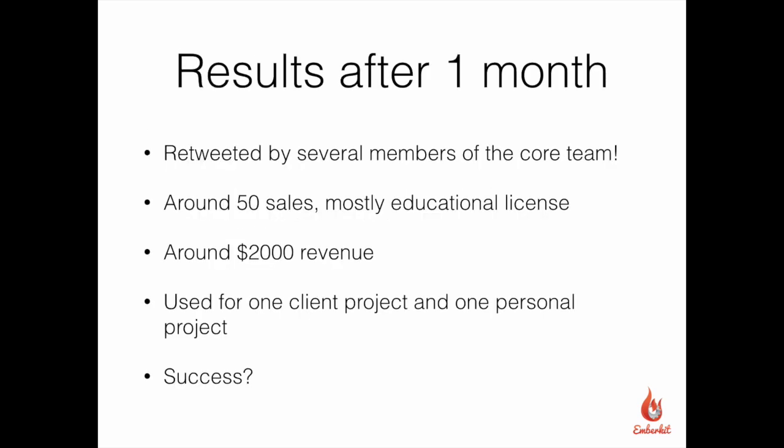After one month, I was really fortunate to be retweeted by a couple of members of the core team and got seen by loads of people — made about 50 sales, mostly of the educational license. There are three licenses: the educational license is $39, and lets you look at the code and hopefully learn something from it. There's a single-site license which lets you build a site on it, and a multi-site license for agencies. I've had a couple of sales of the single-site and multi-site, but it's mostly been people who wanted to learn, which is quite good.